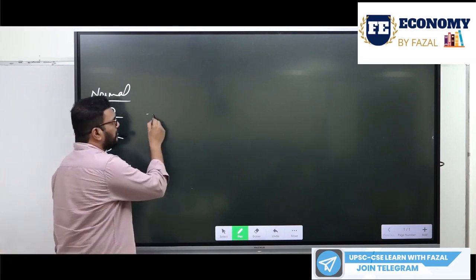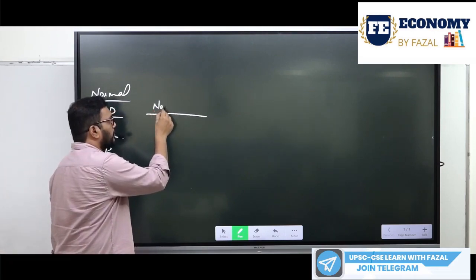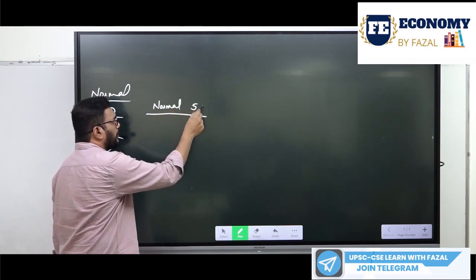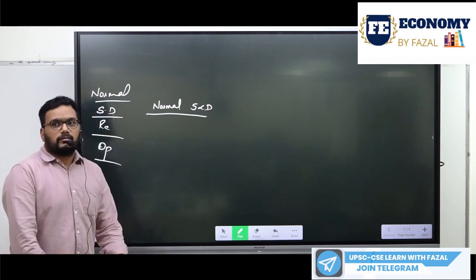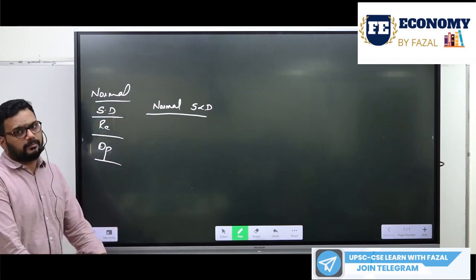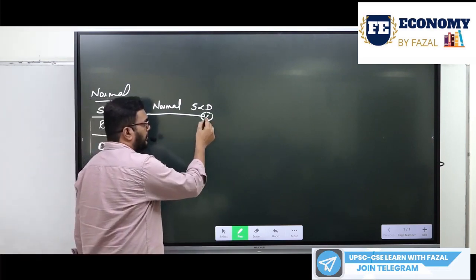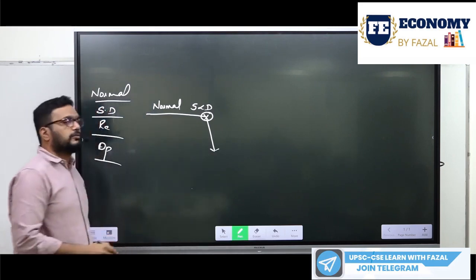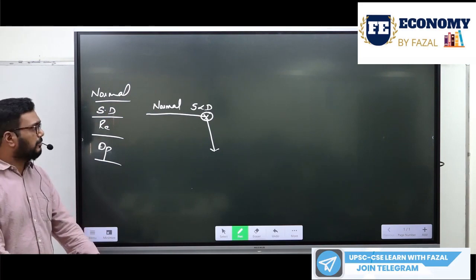When everything is going well, we call this a normal phase in the economy, where supply and demand will try to meet. We cannot say they will meet, but they will try to meet at some point. If there is a cutoff in supply and demand, the economy will fall — meaning the growth in the economy in that particular country will fall.